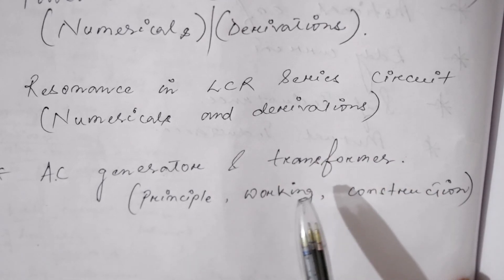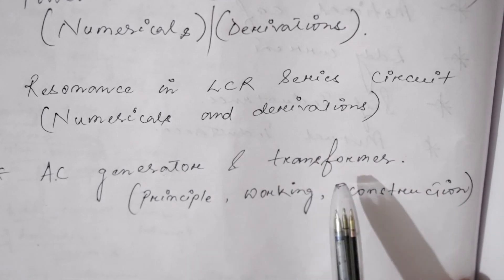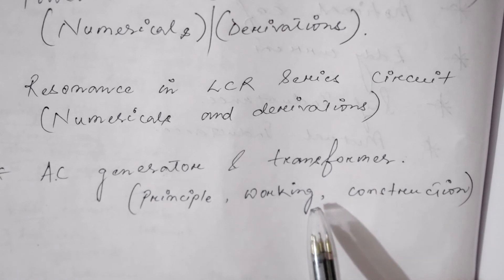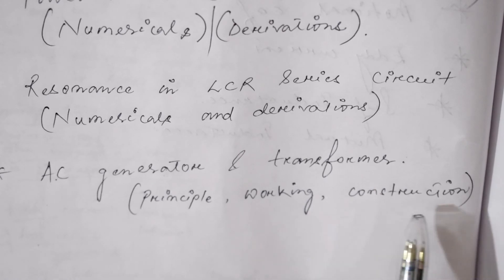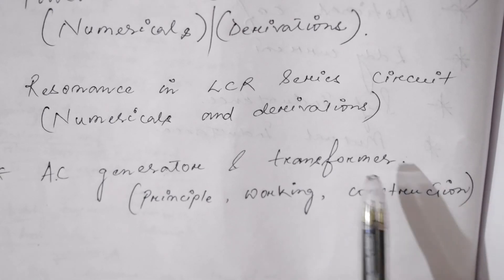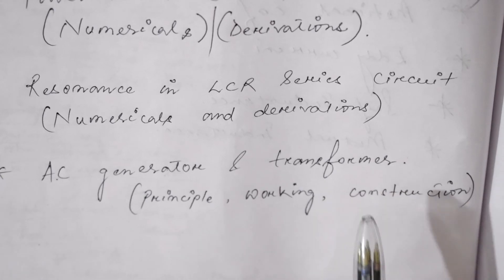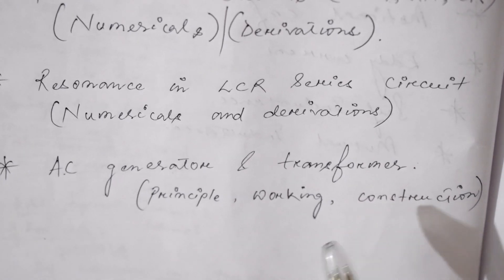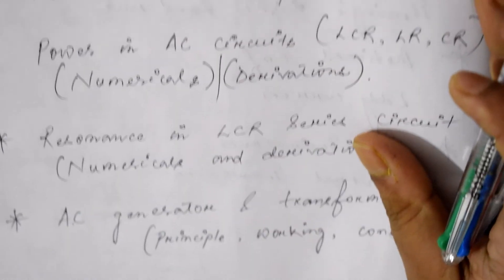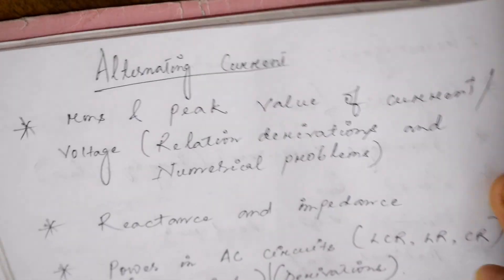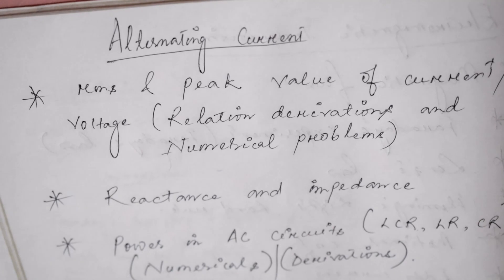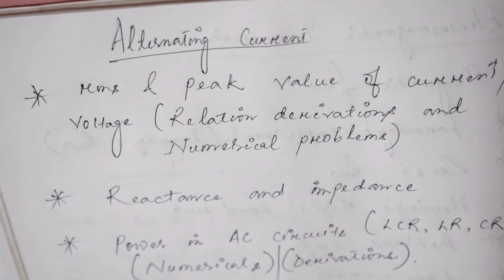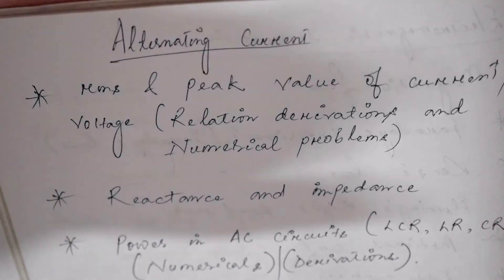The next topic is the transformer — the working principle of a transformer, how it works, its various parts, and its construction. These are the important topics from the chapter Alternating Current. I hope you liked the video; if you did, please subscribe to my channel. Thank you.